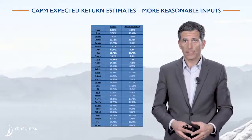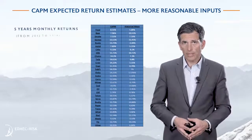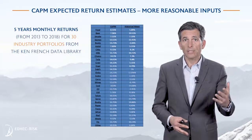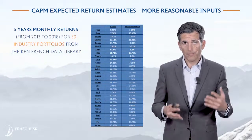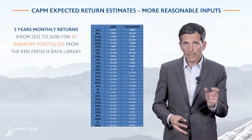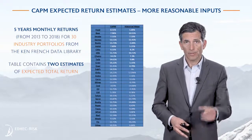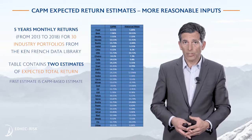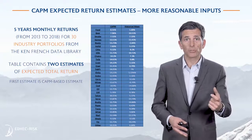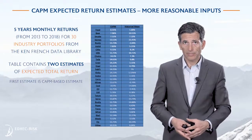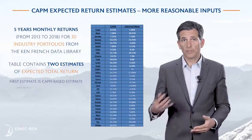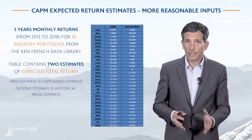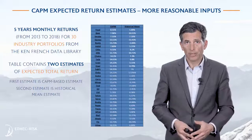Before we do so, let's take a look at the kind of estimates you get. In this context, we are using the 30 industry portfolios from the Kenneth French data library, available on his website, giving us 30 sector indices. We are looking at five years of monthly data from 2013 to 2018. This table contains two types of estimates for expected return: the first column is the CAPM-based estimate using sample betas, risk-free rate, and market risk premium; the second column is the historical mean — simply the sample mean over this five-year period.